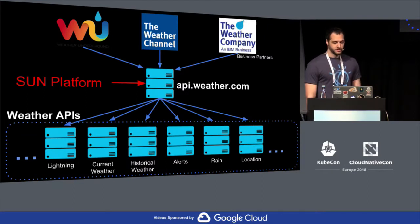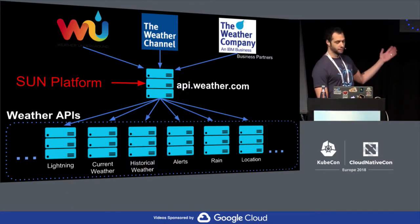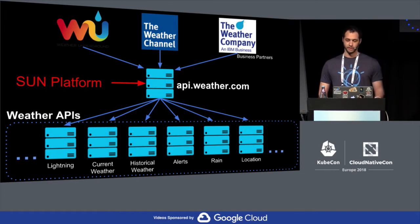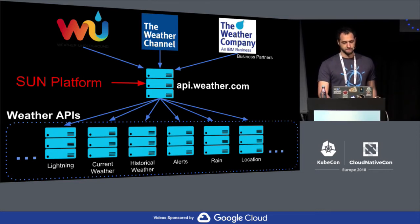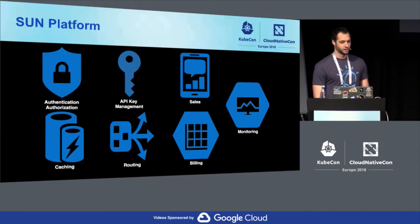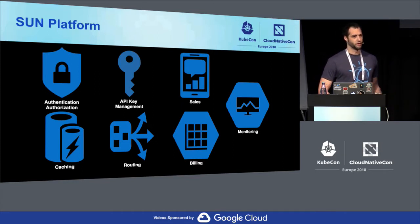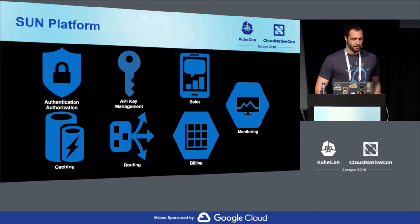The Sun Platform really sits between those client platforms and the weather APIs that serve the weather data. We serve a number of functions for both clients hitting the weather as well as developers who are making and distributing these APIs. We perform about seven main functions: authentication, authorization, API key management, a sales pipeline, edge caching, routing, and billing.